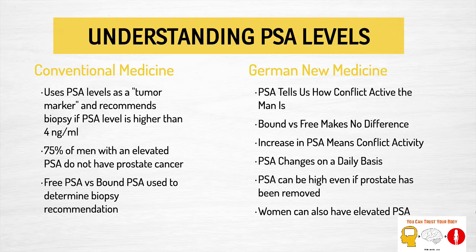From the German New Medicine perspective, PSA simply tells us how conflict active the man is. The bound versus free distinction doesn't really make any difference. PSA changes on a daily basis — if a man looked on Facebook and saw a picture of his ex-girlfriend with a new guy, that could elevate his PSA, and if he happens to be having this test on that day it is always changing. Another interesting fact about PSA is it can be high even if the prostate has been removed. High PSA levels have also been found in women — the breast and saliva also produce PSA — which is interesting given it's called prostate-specific antigen, and it doesn't really seem to be all that specific to the prostate.